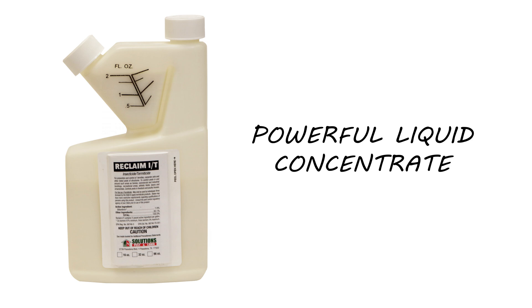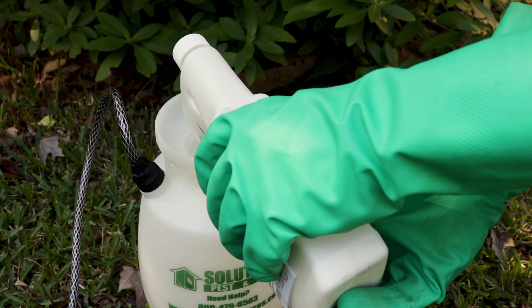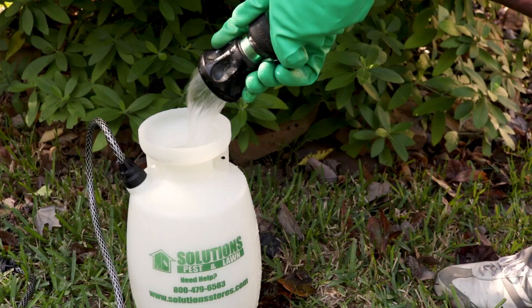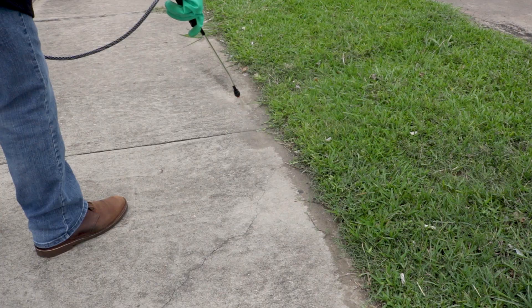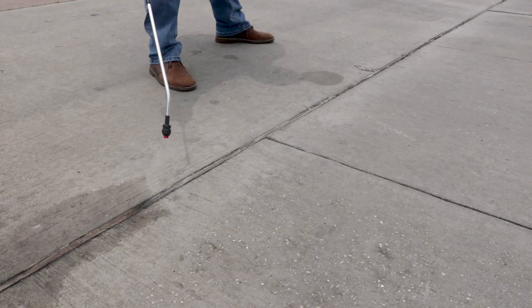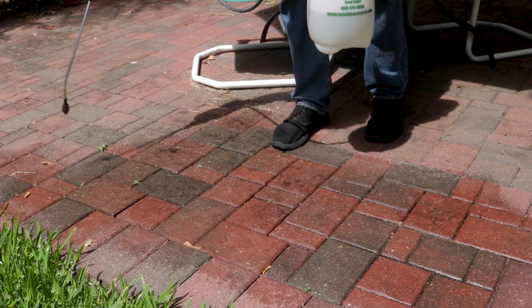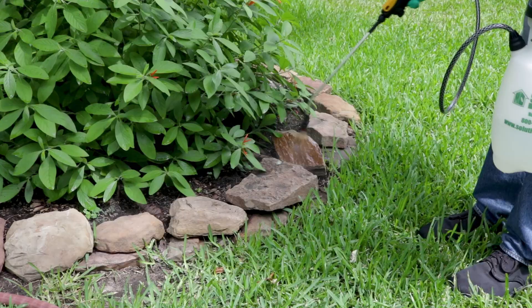To get started, first use Reclaim IT. This is a powerful liquid concentrate that not only is a repellent, but also offers a quick knockdown and long residual. Use this with a pump-up sprayer following label instructions. Spray ant nests and activity along sidewalks, driveways, patios, and landscape beds.